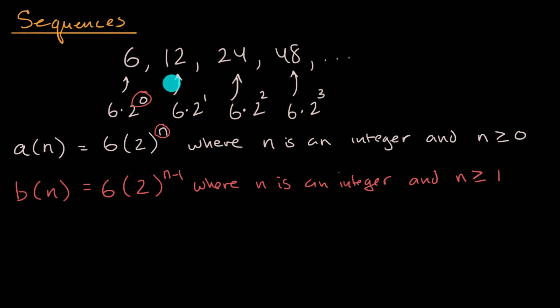We could also do it recursively. And we've seen this in other videos. We can define a function recursively. We could say, all right, look, it looks like each of these terms in our sequence is twice the previous term. So if we want a recursive definition for the sequence, we can define the first term, or in this case, we could say the zeroth term, if we want to start at n equals zero.